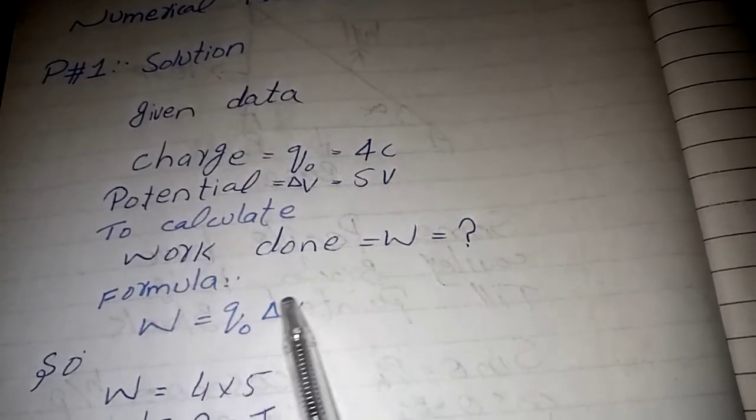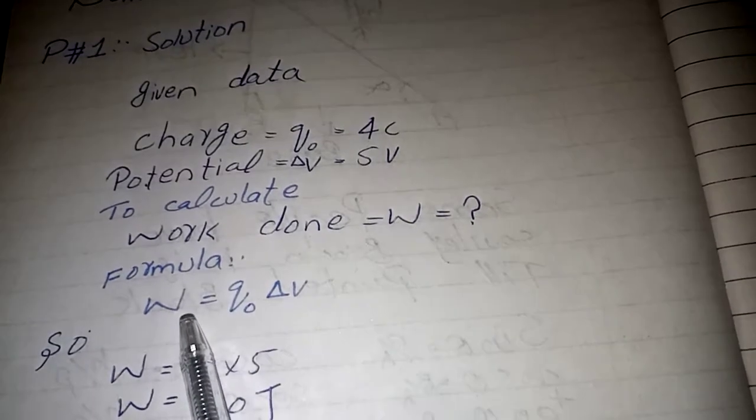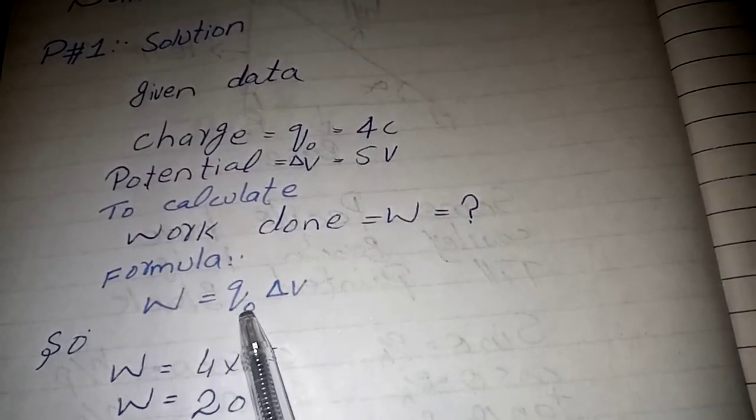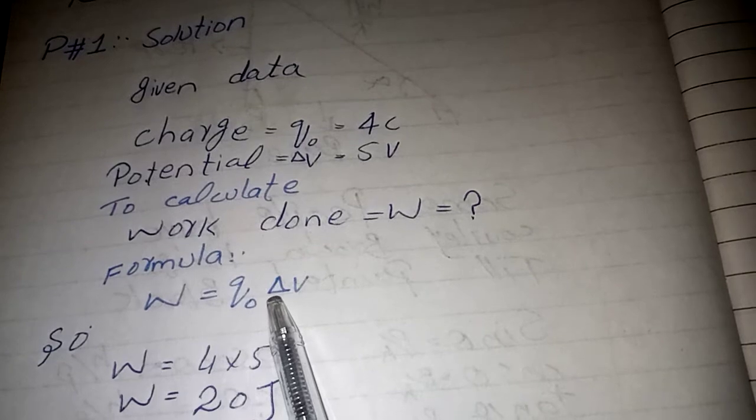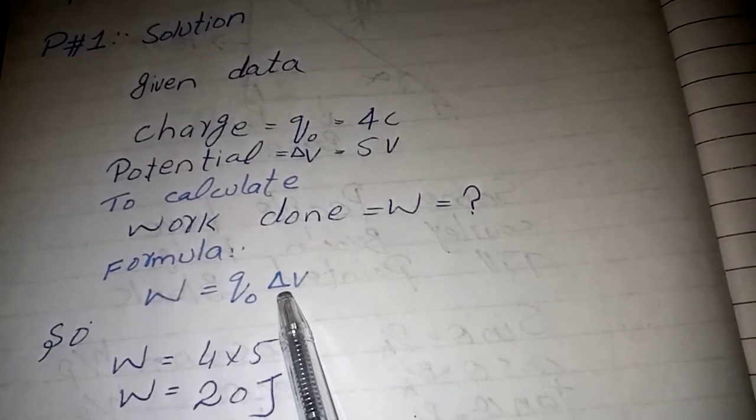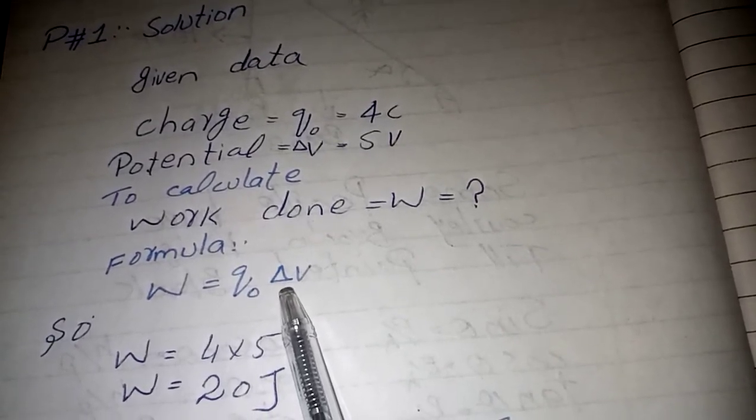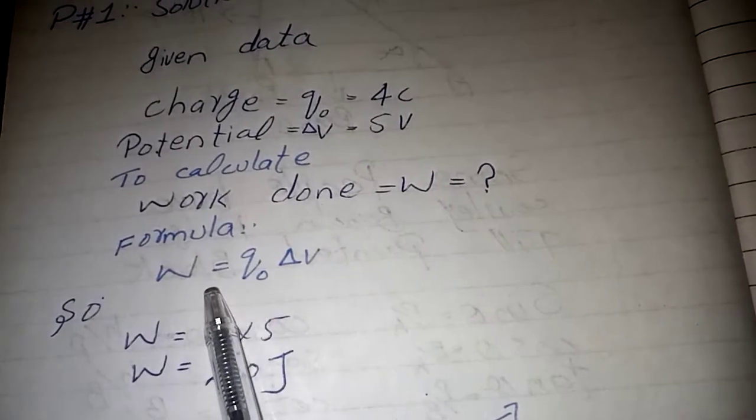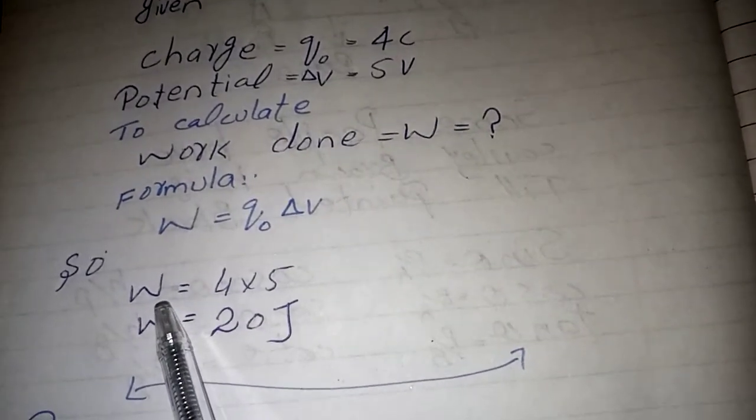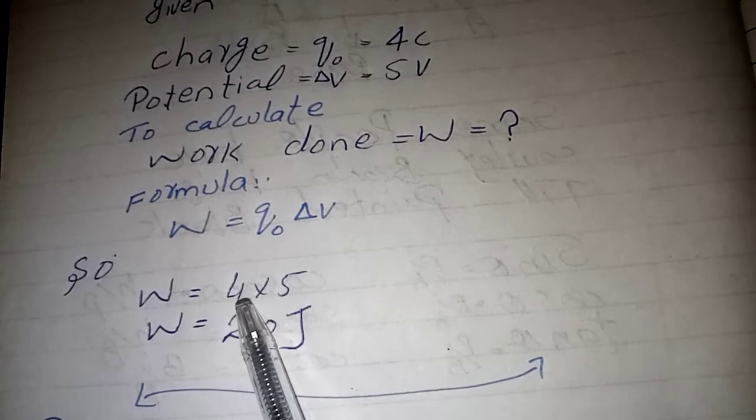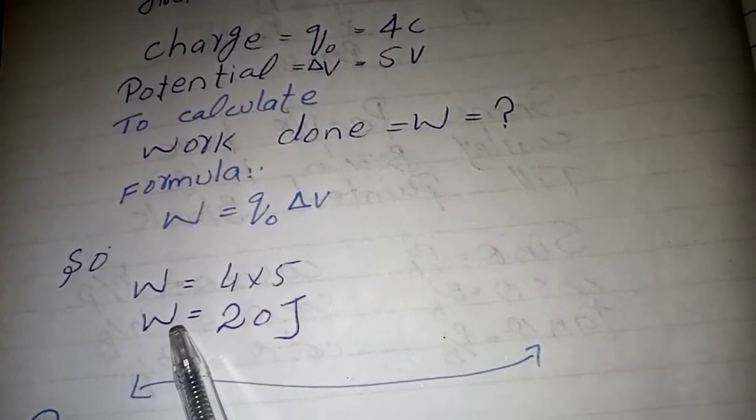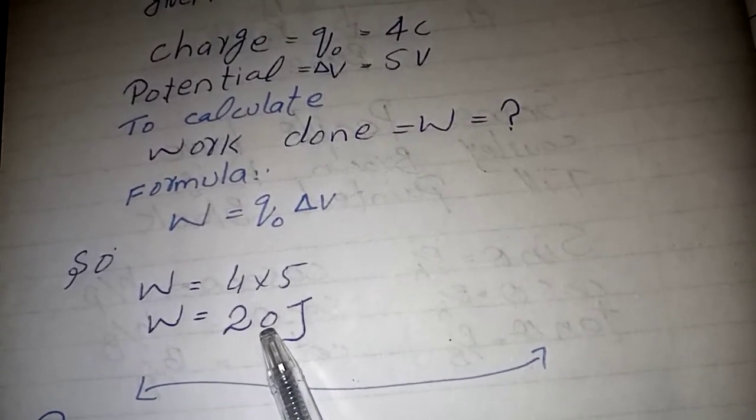The formula for work done is W equals Q times ΔV, the potential difference. Putting values into this formula, we get work done equals 4 times 5, and work done equals 20 joules.